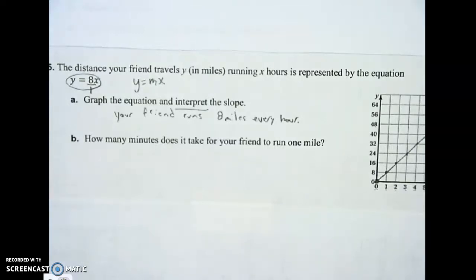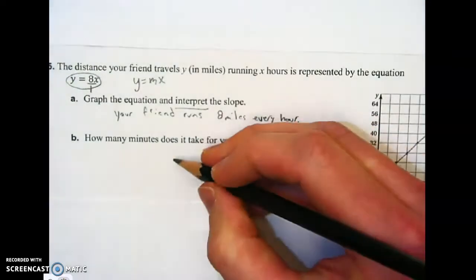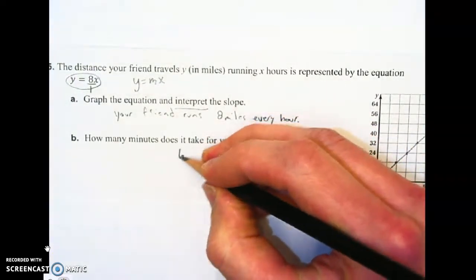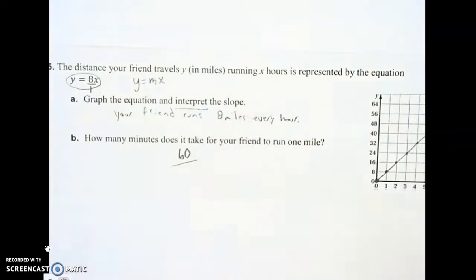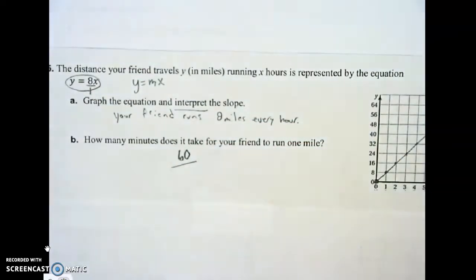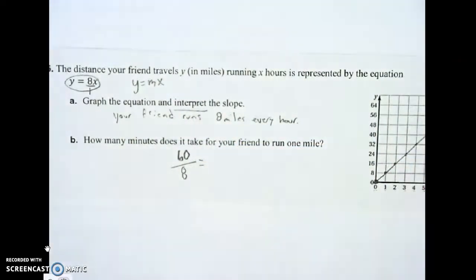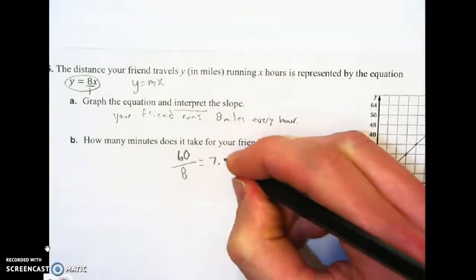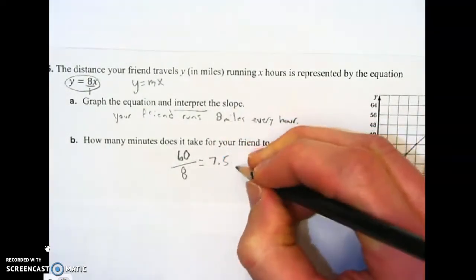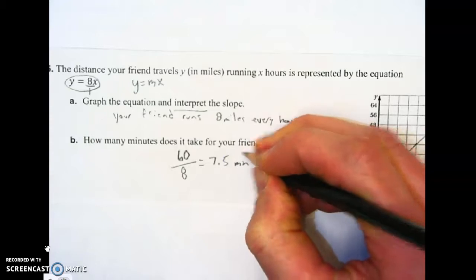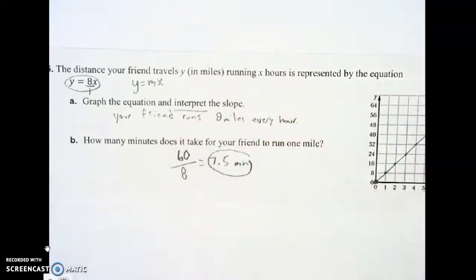How many minutes does it take your friend to run 1 mile? Well, let's break up an hour into minutes. So we'll do 60. And we need to divide those 60 minutes up equally among the 8 miles that your friend ran. So if we do 60 divided by 8, we'll get 7.5 minutes. That is how many minutes that's going to be.